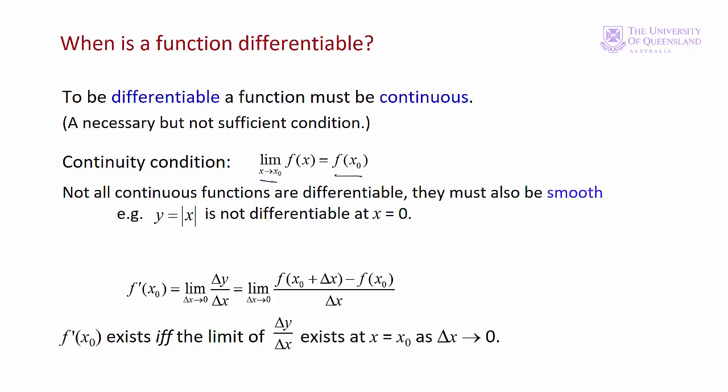For example, y = |x| isn't differentiable at x = 0. If we plot the axes, y = |x| forms a V-shape, and at x = 0 we can't determine the slope — we've got a sharp point there. We can determine the slope at other places when x ≠ 0, but not at that point. These two conditions — continuity and smoothness — are actually combined in the Newton quotient. f'(x₀) exists if and only if the limit of delta y / delta x exists at x = x₀ as delta x approaches zero.